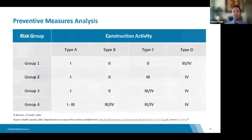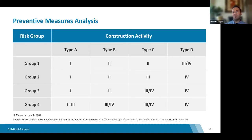Now that we've reviewed these two factors, here is the actual matrix that cross-references them. The risk groups are along the left and the CRMD activity type is along the top of the table. The preventive measures — PM1 through PM4 — are in the field. These give us clues on how to act and what measures to ensure contractors follow. Once the preventive measure category is generated, the level of prevention required is outlined in the reference document.